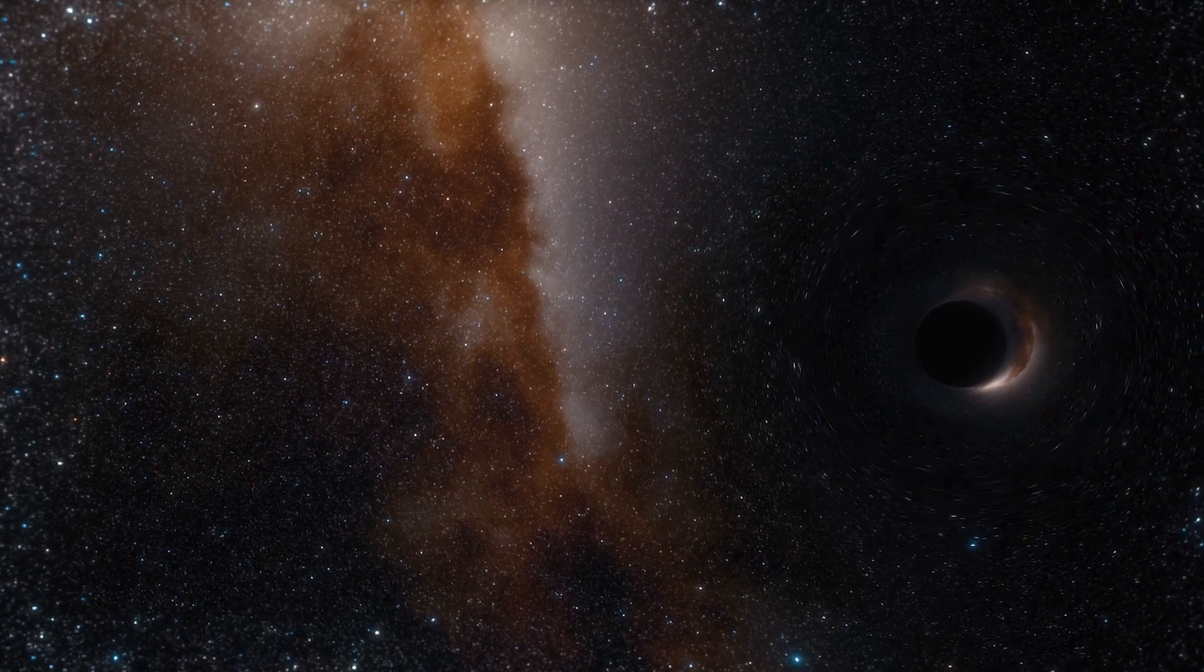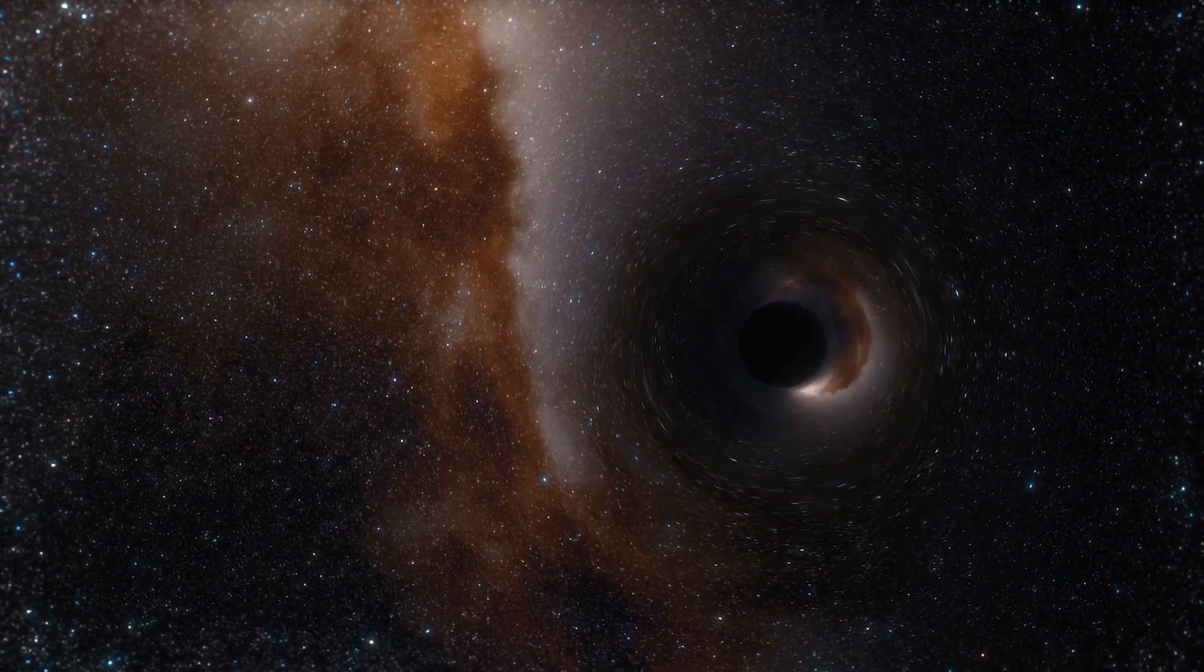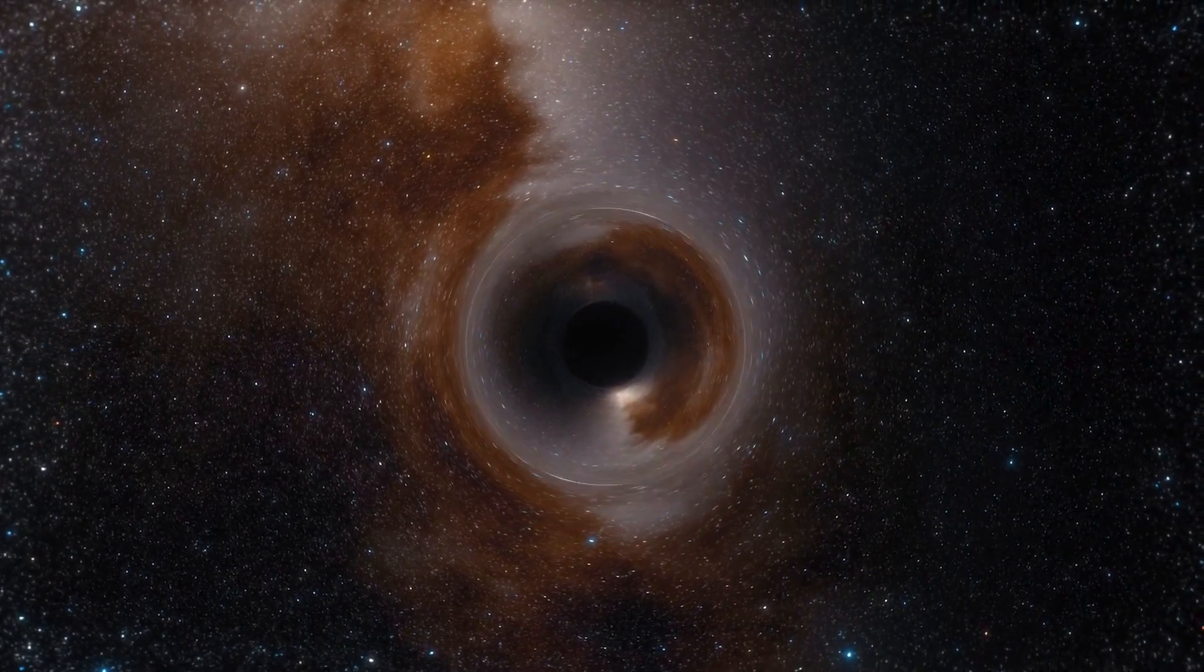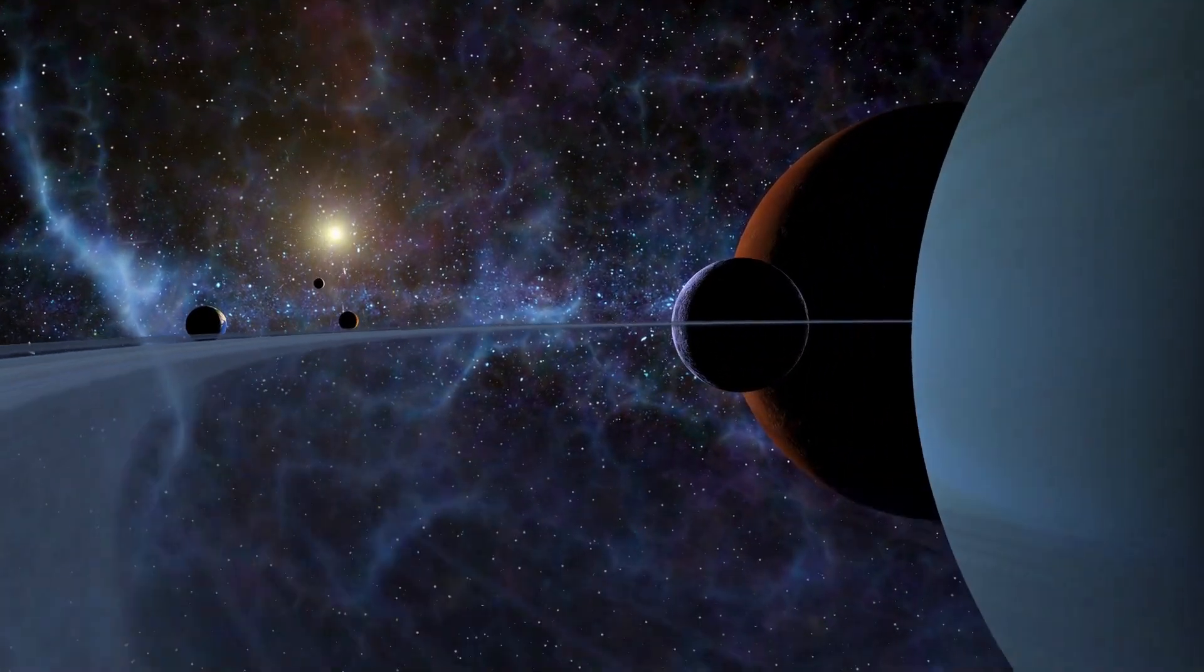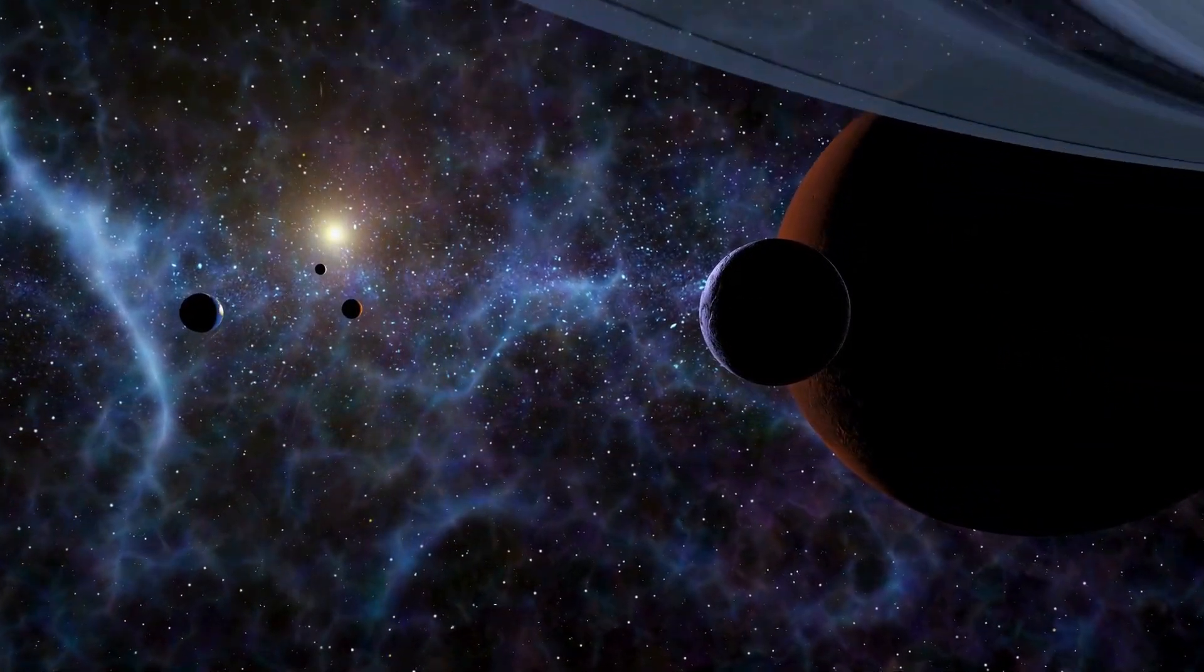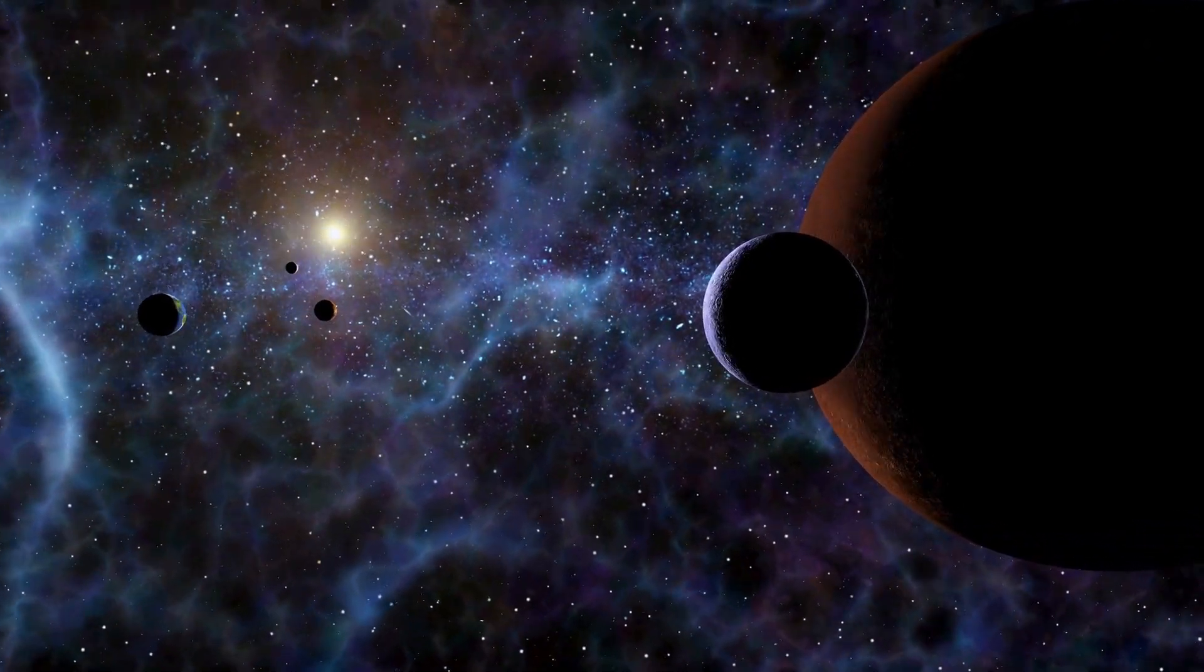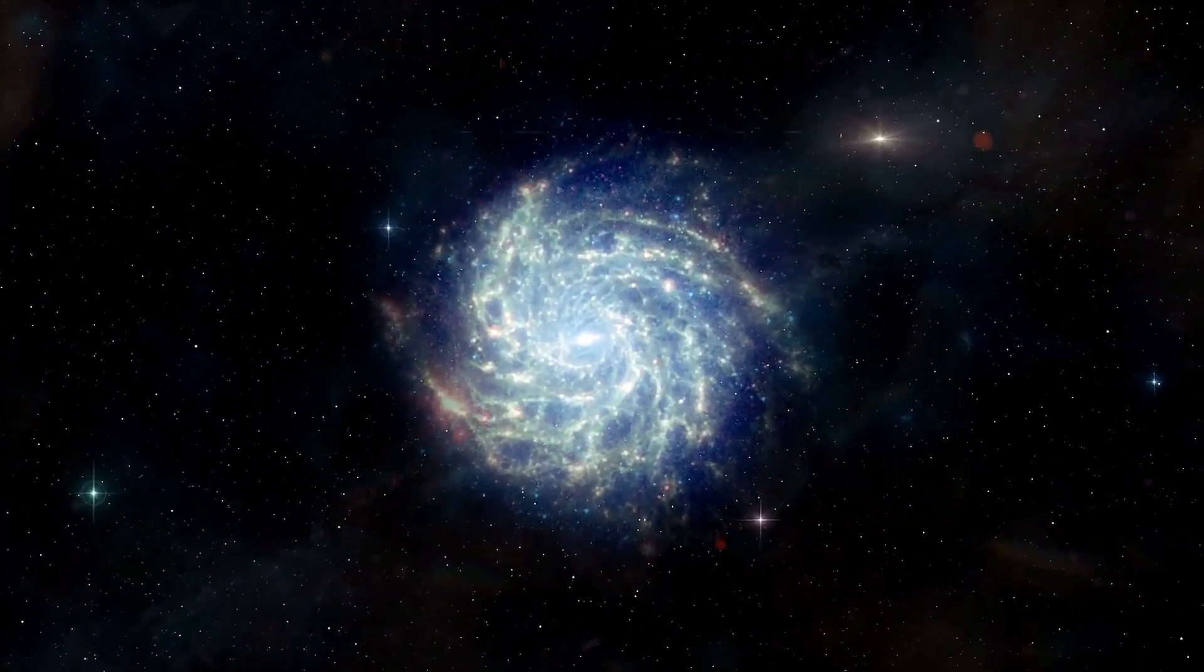In binary systems, black holes can pull matter from a companion star, forming an accretion disk. This matter heats up and emits X-rays as it spirals into the black hole. The collision and merger of black holes can produce gravitational waves, ripples in spacetime that can be detected by observatories on Earth. Some black holes also emit powerful jets of particles at nearly the speed of light, which can extend for thousands of light years into space, powered by the magnetic fields around the black hole.